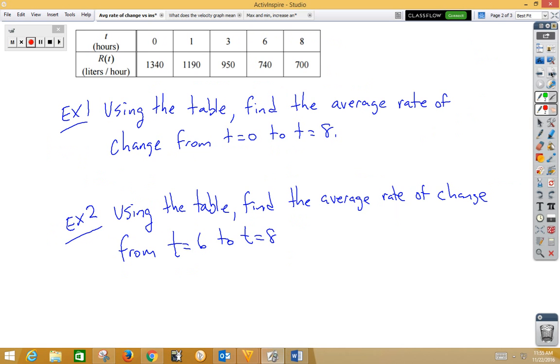Let's take a look at an example of this table, which is in hours and liters per hour. In example one, it says, using the table, find the average rate of change from zero to eight. Again, that's going to be slope at two points, and we're going to be using the point zero comma thirteen forty and eight comma seven hundred.